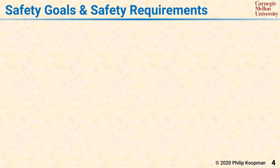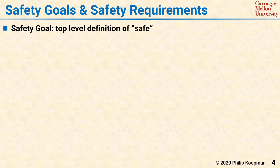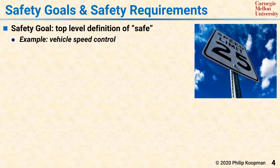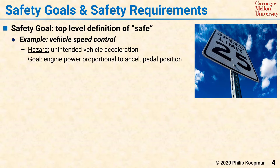Once system hazards have been identified, a safety goal is created to identify what safe means with respect to that hazard. For example, in a vehicle speed control application, one of the hazards identified might be unintended vehicle acceleration. The goal to mitigate that hazard might be to ensure that the engine power is proportional to the accelerator pedal position, with a released pedal producing minimal power and a fully depressed pedal producing maximum power.